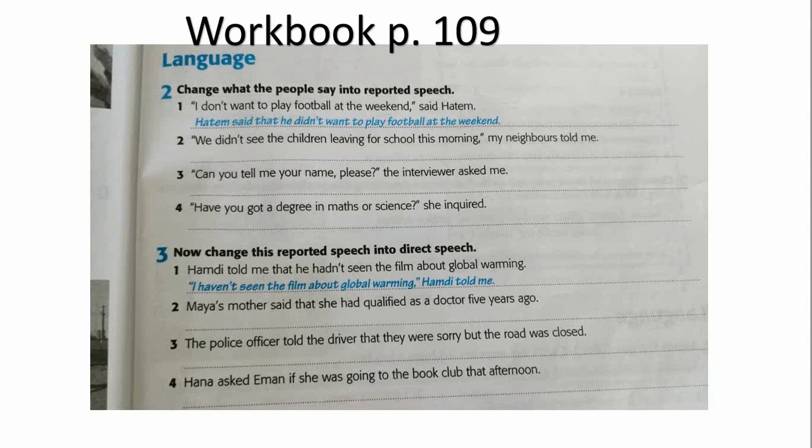'Can you tell me your name, please?' the interviewer asked me. Two possible answers: 'The interviewer asked me if I could tell him my name' or 'The interviewer asked me about my name.' Next: 'Have you got a degree in math or science?' she inquired → 'She inquired if I had got a degree in math or science.'